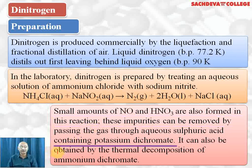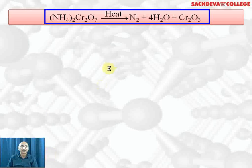These impurities can be removed by passing through aqueous sulfuric acid containing potassium dichromate. Nitrogen can also be obtained by thermal decomposition of ammonium dichromate. Ammonium dichromate is an orange-colored solid.